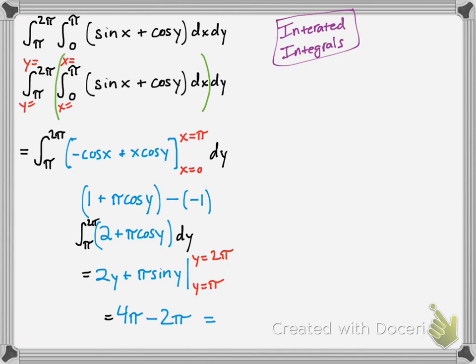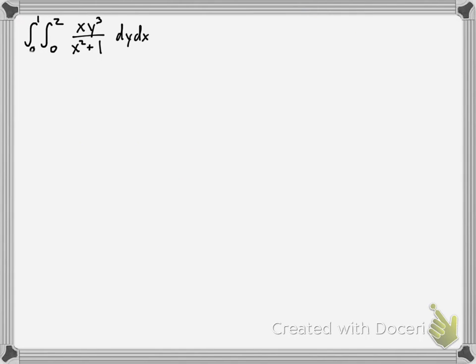And plug those in. You get 4 pi there. And pi sine y would be 2 pi. And you subtract and you get 2 pi as your answer. Awesome. So we're going to move on to another one. This one's a little bit more difficult. But we'll try it.